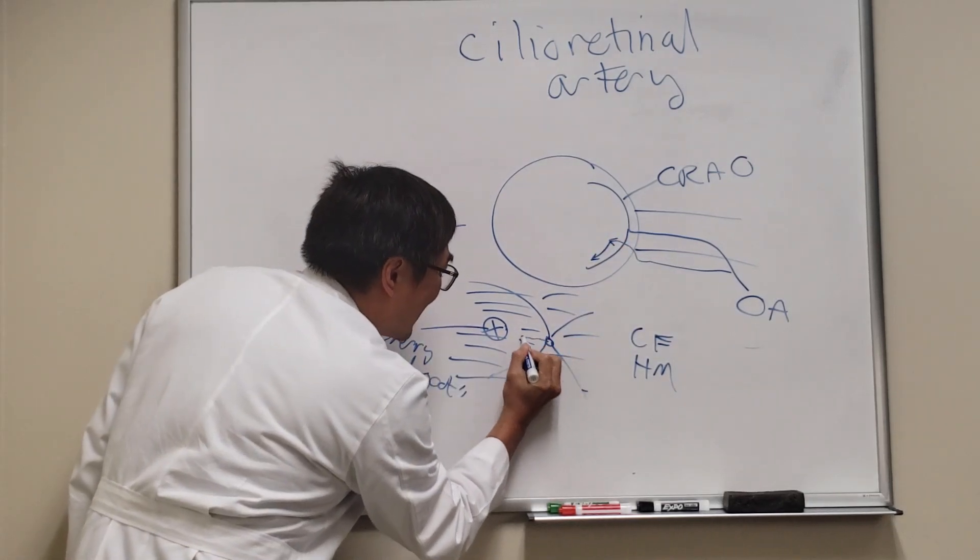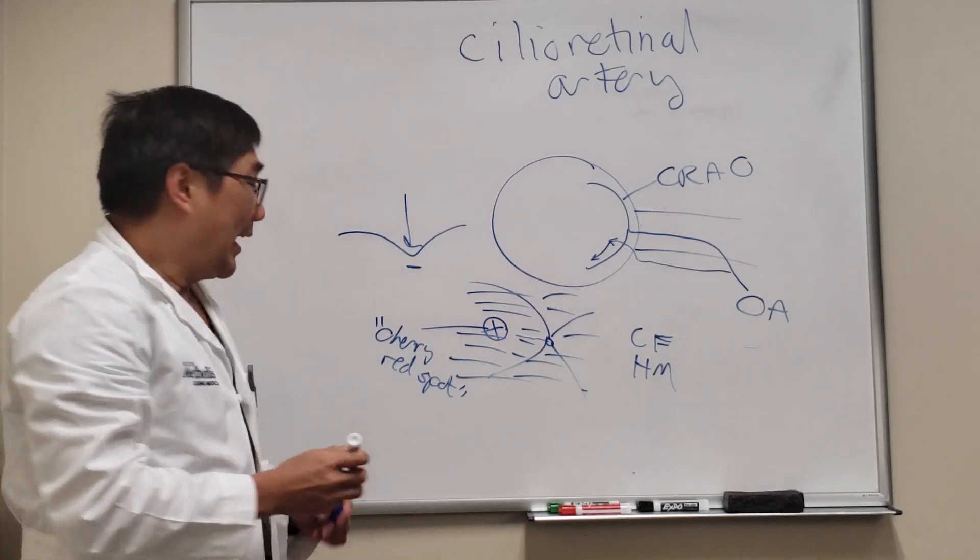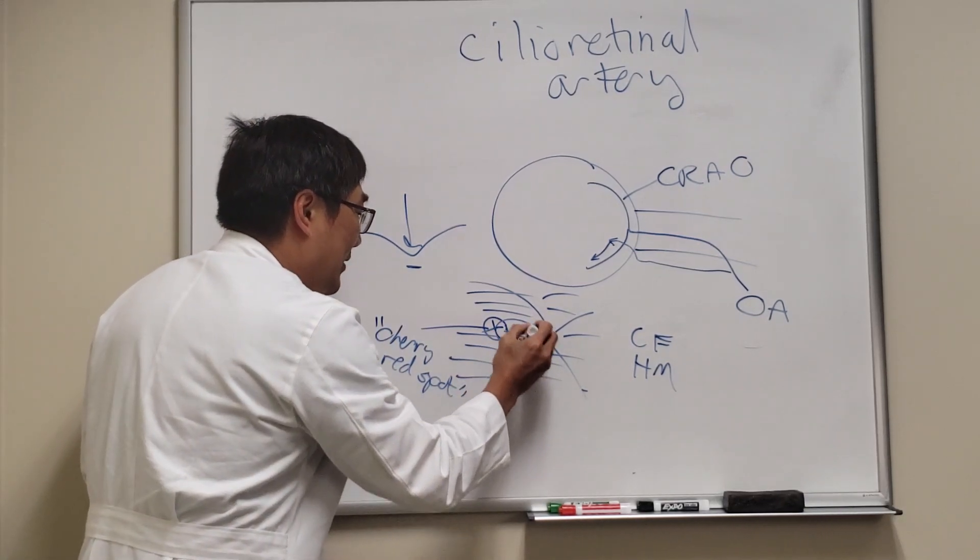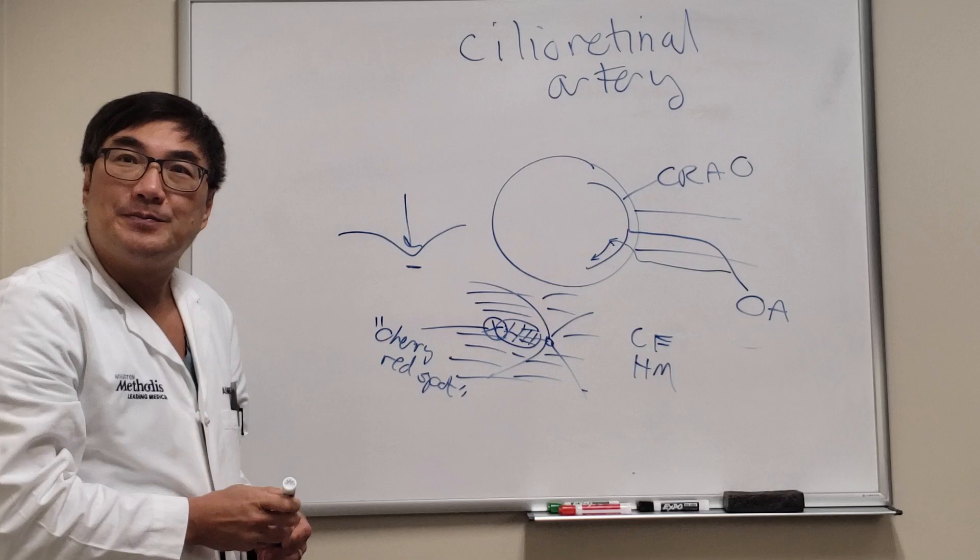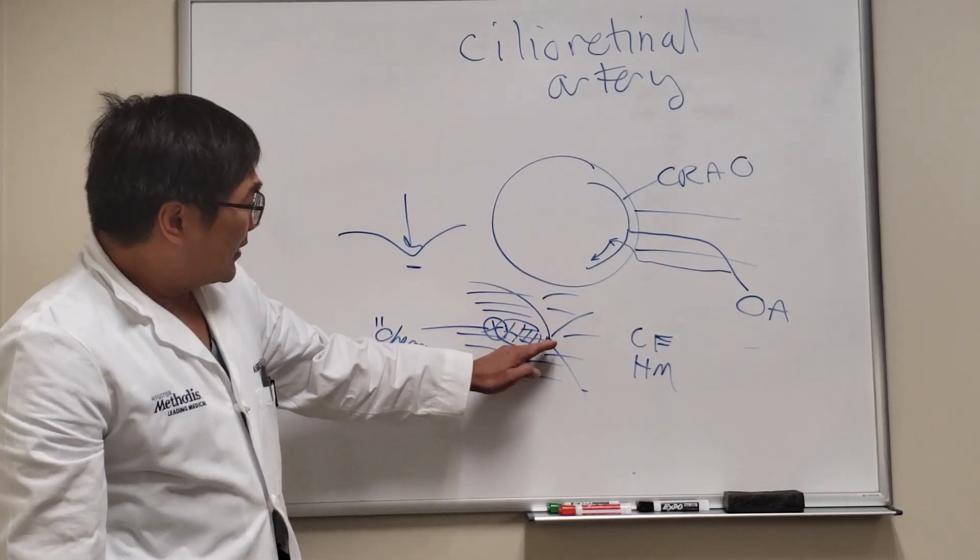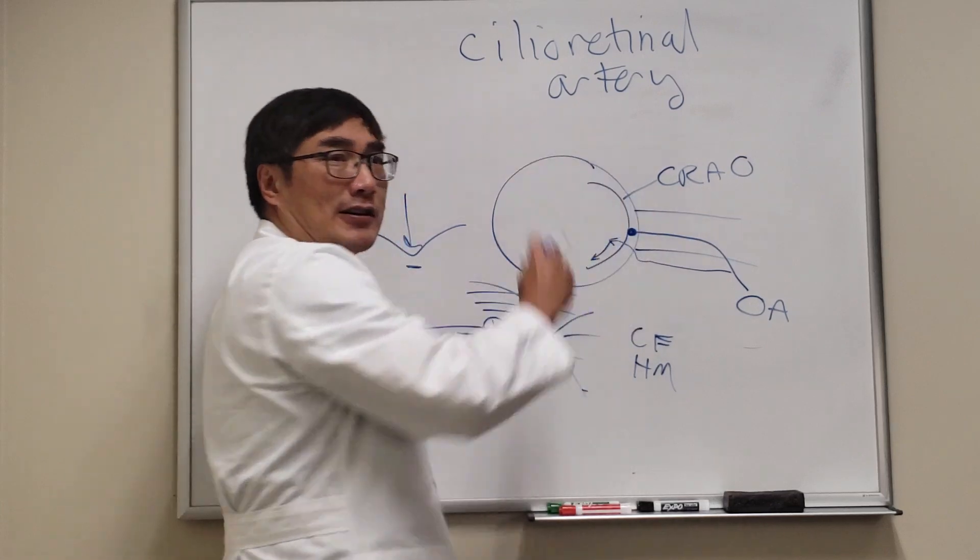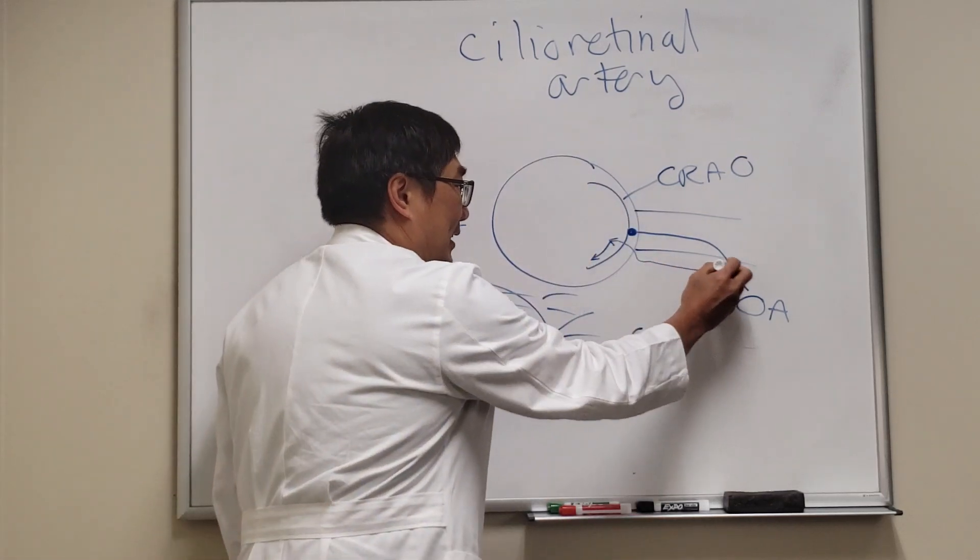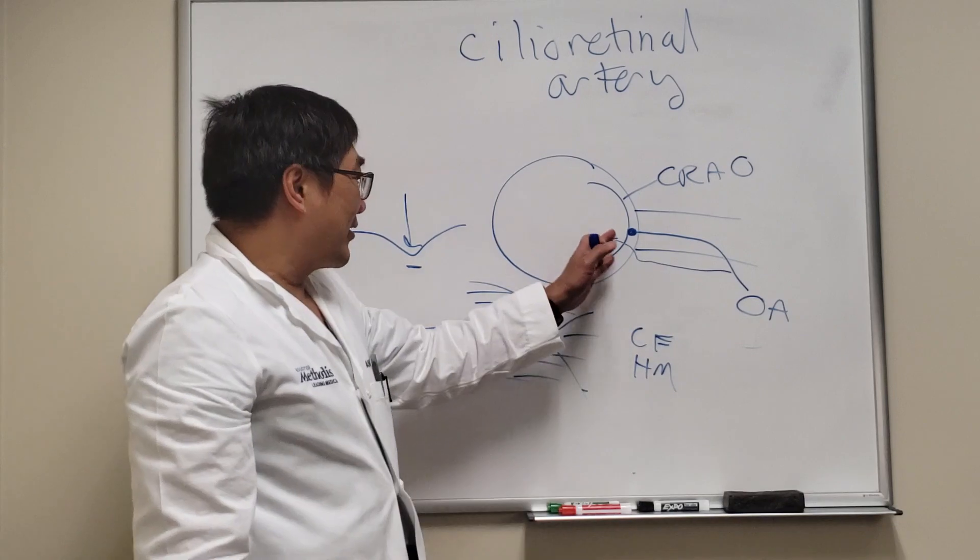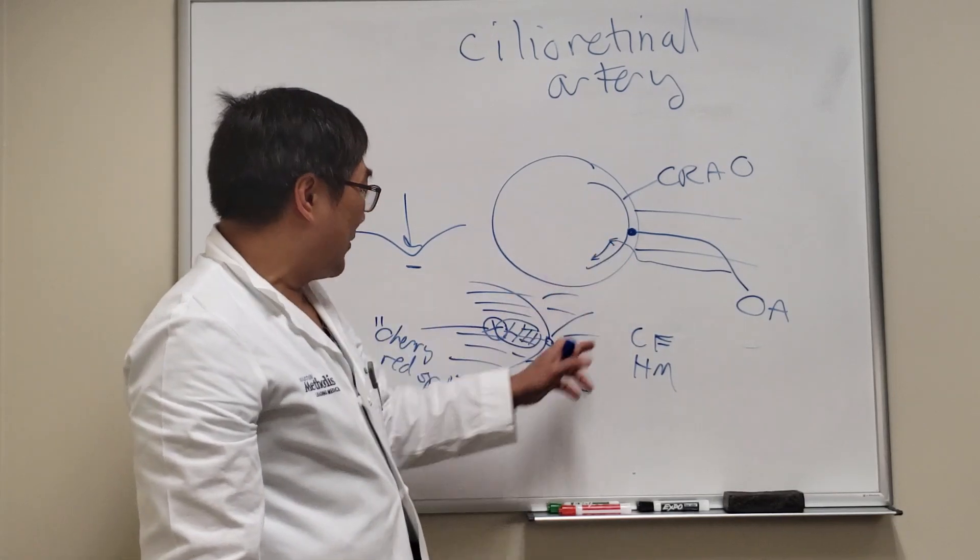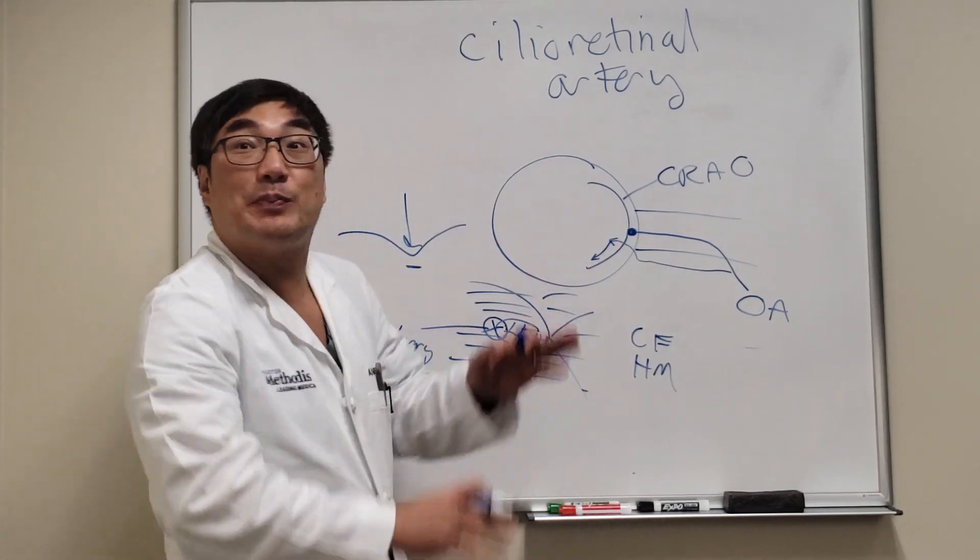It looks like it's coming right out of the disc, and it happens to be sparing this little piece right here. Because the occlusion of the thrombus is in the central retinal artery, it did not hit this little posterior ciliary artery—the cilioretinal artery. That is what we call cilioretinal artery sparing.